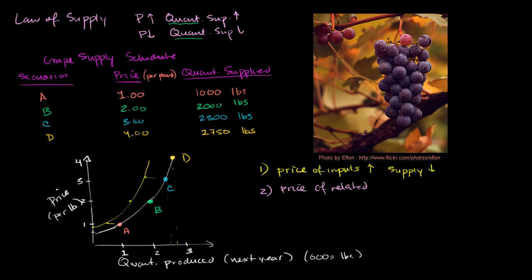What would happen if the price of blueberries went up? I would say, maybe I can do better with blueberries, and I would allocate more of my land to blueberries than to grapes. So once again, if the price of related goods—well, it depends which related goods—